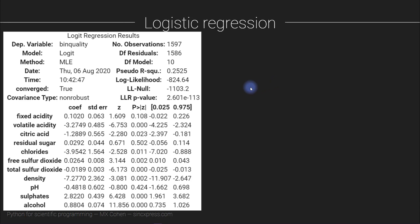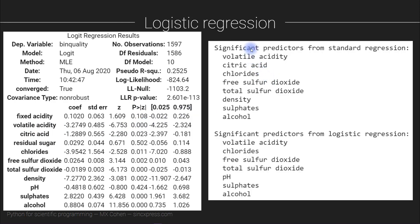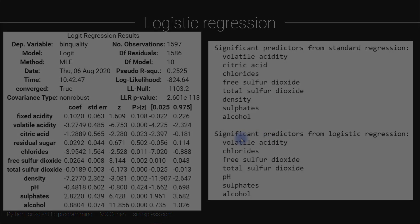Once you've set up and run the model, you'll get a table quite similar to what we saw for the multiple regression. You want to grab all predictors that are statistically significant (p < 0.05), then produce text showing the significant predictors from the standard regression and from the logistic regression, so you can inspect which predictors appear in one model but not the other.